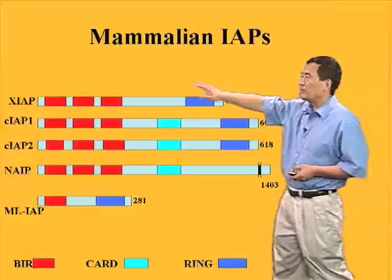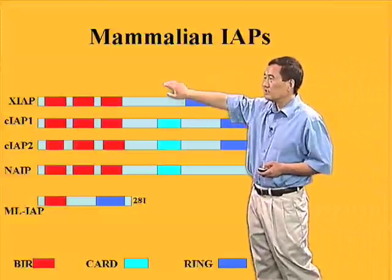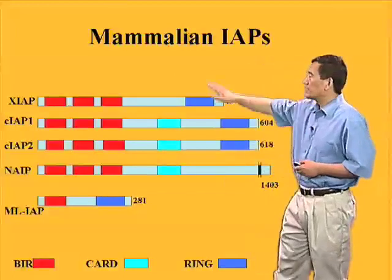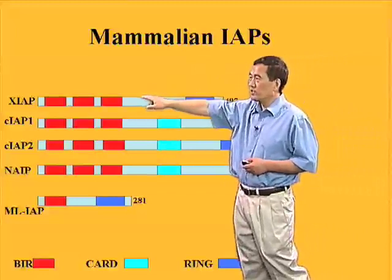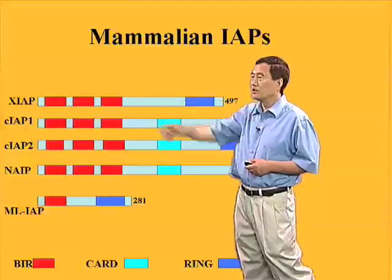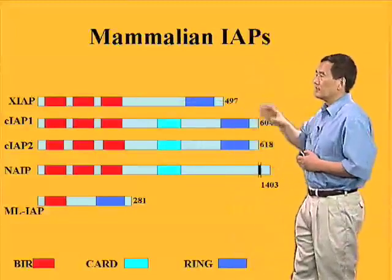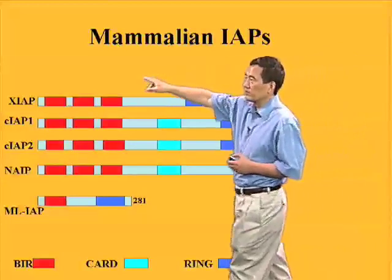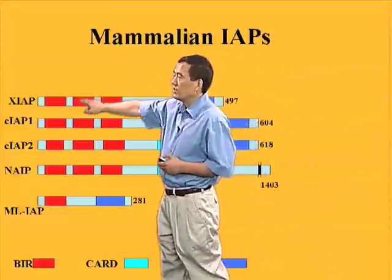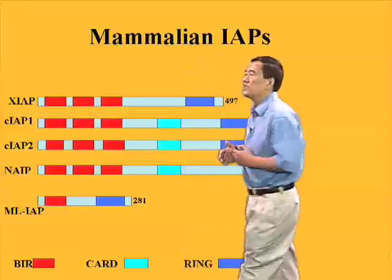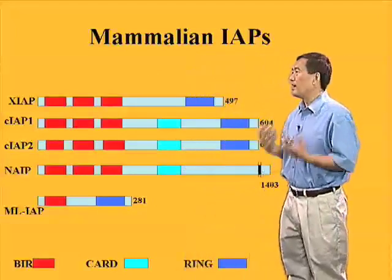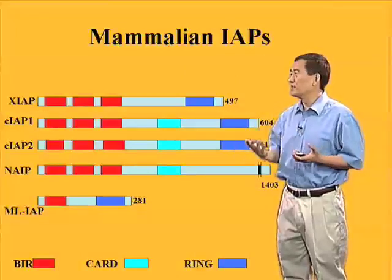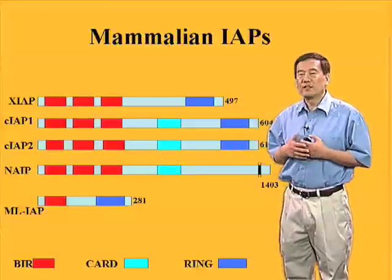The best-studied IAP is XIAP — named because it is encoded on the X chromosome. The BIR domains of XIAP, particularly BIR3 (the third BIR domain) and BIR2 (the second BIR domain), are able to directly bind caspase-9 and caspase-3 respectively, and inhibit their activity. The other BIR domains in other IAPs are still not very well characterized.